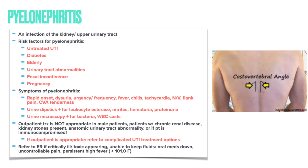Outpatient management is never appropriate for male patients, those with chronic renal disease, kidney stones, anatomic urinary tract abnormalities, or immunocompromised patients — these require hospital management. Also hospitalize patients appearing critically ill or toxic, unable to keep fluids or oral meds down, with uncontrollable pain, or persistent high fever greater than 101°F. An otherwise healthy, immunocompetent, non-pregnant female may be managed outpatient using the complicated UTI medication regimen.